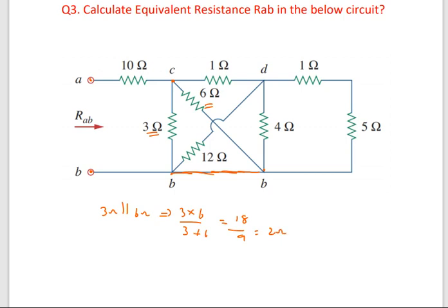Using that formula: three times six is 18, divided by nine, that is two ohms. In the same way, 12 ohms and 4 ohms are also in parallel because both resistors are connected between the same nodes D and B. So 12 parallel to 4 equals 12 into 4 divided by 12 plus 4, which is 48 divided by 16, that is three ohms.